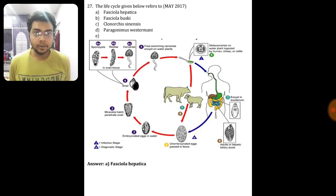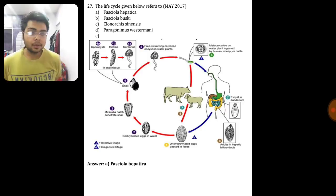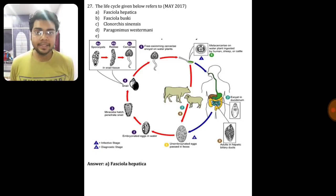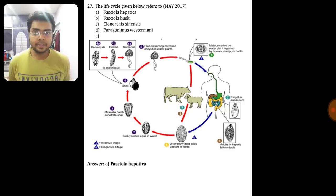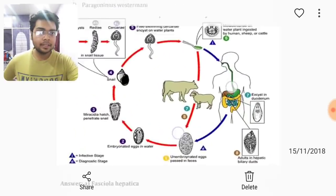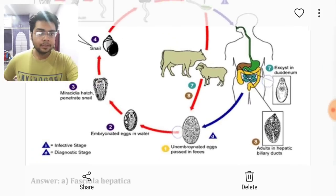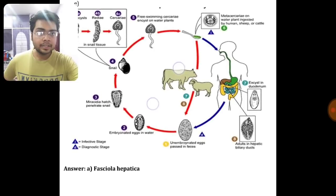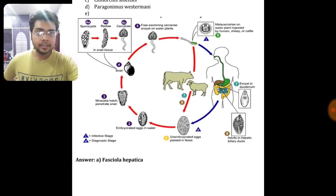One more question: this life cycle belongs to which organism? This picture was taken from the CDC website. Please go through the CDC website and see the parasite life cycles so that you don't face difficulty in identifying them in your main exam. This is Fasciola hepatica — the life cycle shown is of Fasciola hepatica, going through the snail and showing the Cercaria, Redia, and Sporocysts.